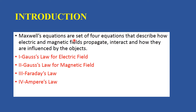Maxwell's Equations are a set of four equations that describe how electric and magnetic fields propagate, interact, and how they are influenced by objects. There are four Maxwell's Equations, each using a particular law. The first Maxwell's Equation uses Gauss' law for electric field. The second uses Gauss' law for magnetic field. The third uses Faraday's law and the fourth uses Ampere's law.